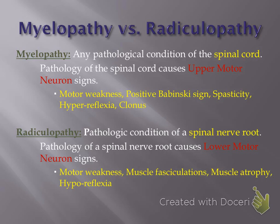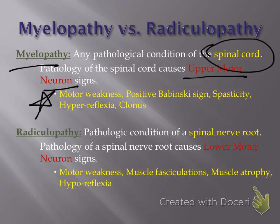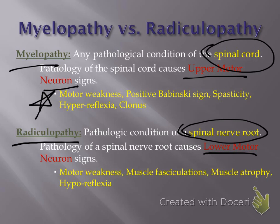In quick review: cervical myelopathy results in upper motor neuron signs due to compression of the spinal cord. Any kind of radiculopathy results from compression of the spinal nerve roots, producing lower motor neuron signs as well as paresthesias along that same route. So cervical myelopathy versus cervical radiculopathy.